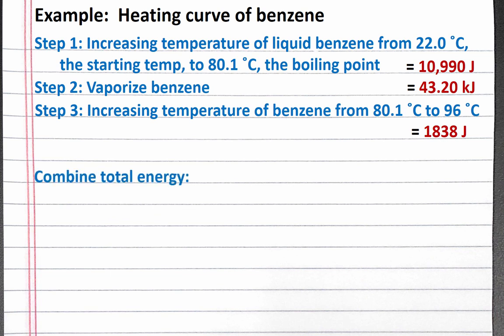The last thing we need to do is sum the energy from each step. We will convert all of our units to kilojoules so we can add them together. 10,990 joules in step 1 becomes 10.99 kilojoules, and 1,838 joules in step 3 becomes 1.838 kilojoules. Completing the addition, we get 50.03 kilojoules.